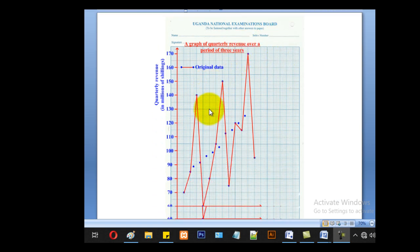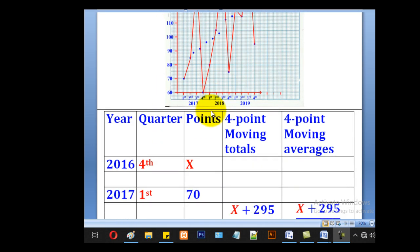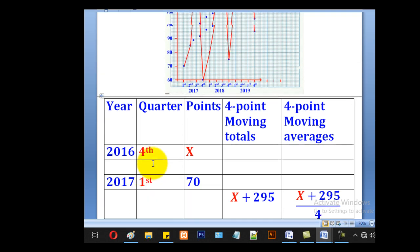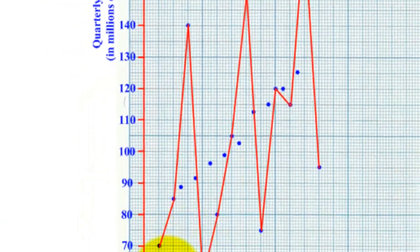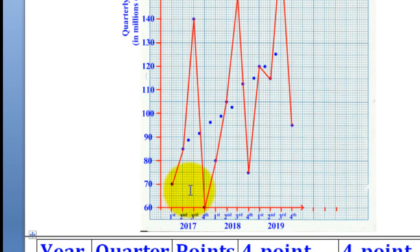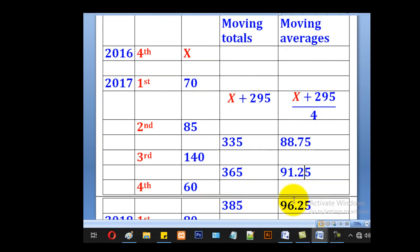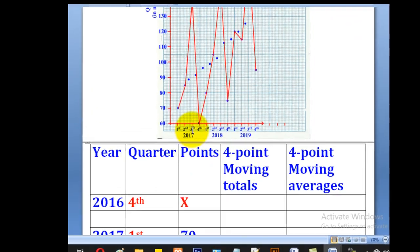Now we are going to moving averages. This point cannot be plotted, so leave it. We shall start from this. We shall plot 88.75 in between the second and third for 2017. Go to 2017 between second and third, take it up and look for 88.75. Plot that point. The next point is 91.25, it is in between third and fourth.